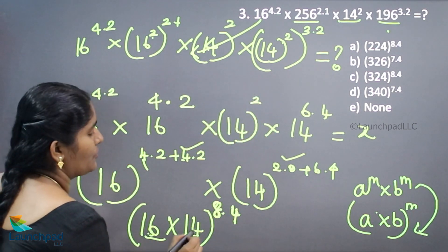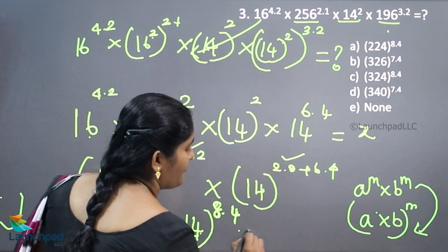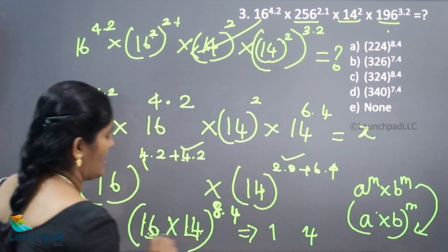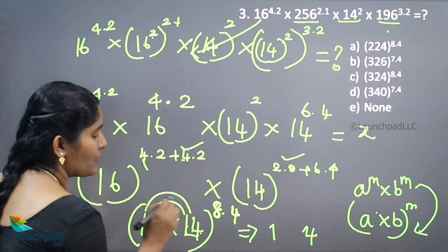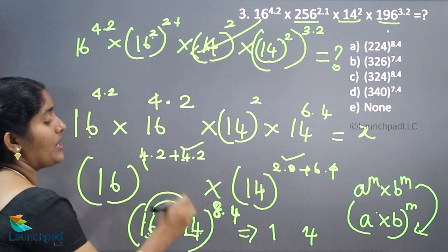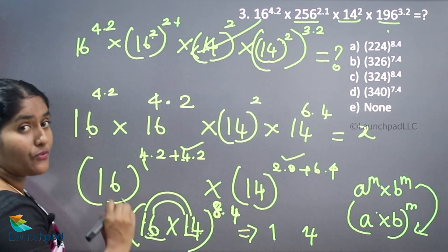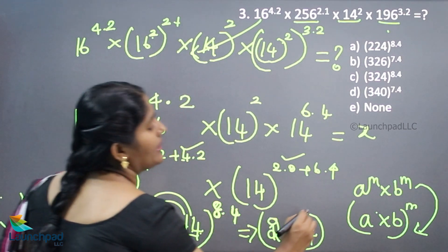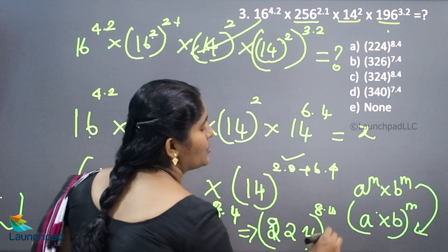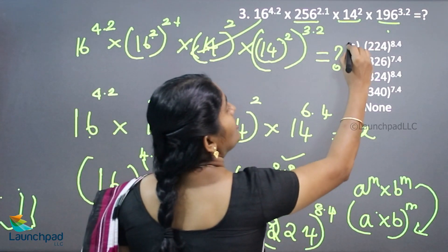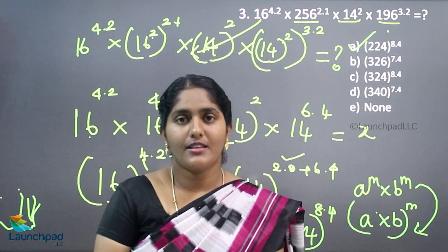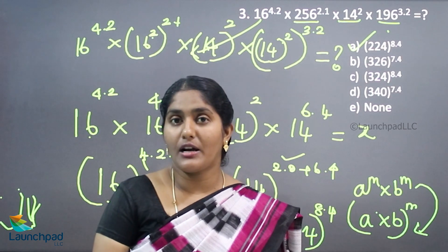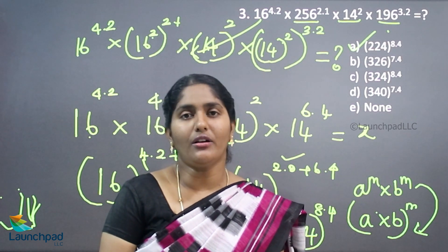So 16 into 14: 6 fours are 24, carry 2; 1 one is 1, 6 ones are 6, 1 four is 4; 6 plus 4 plus 2 is 12, carry 1; so the answer is 224. Therefore 224 to the whole power 8.4 is your answer. Option A is correct. This is the example of how we apply the different base value and same power value rule. Thank you for watching.